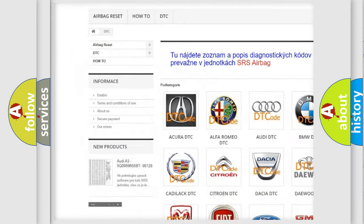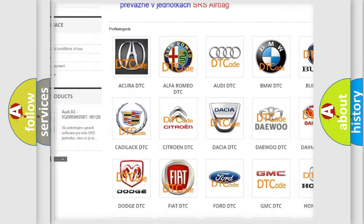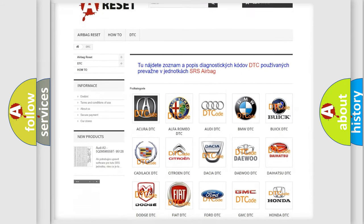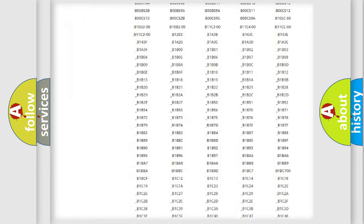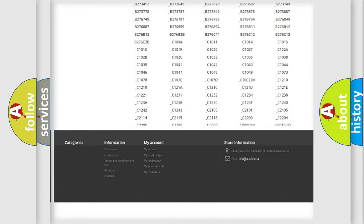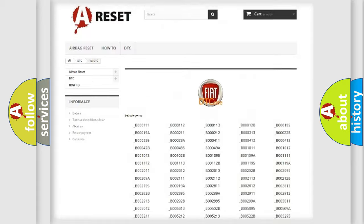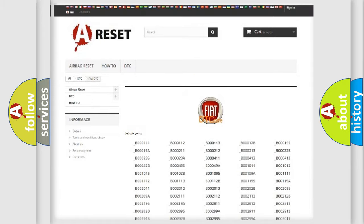Our website airbagreset.sk produces useful videos for you. You do not have to go through the OBD2 protocol anymore to know how to troubleshoot any car breakdown. You will find all the diagnostic codes that can be diagnosed in Fiat vehicles, and also many other useful things.